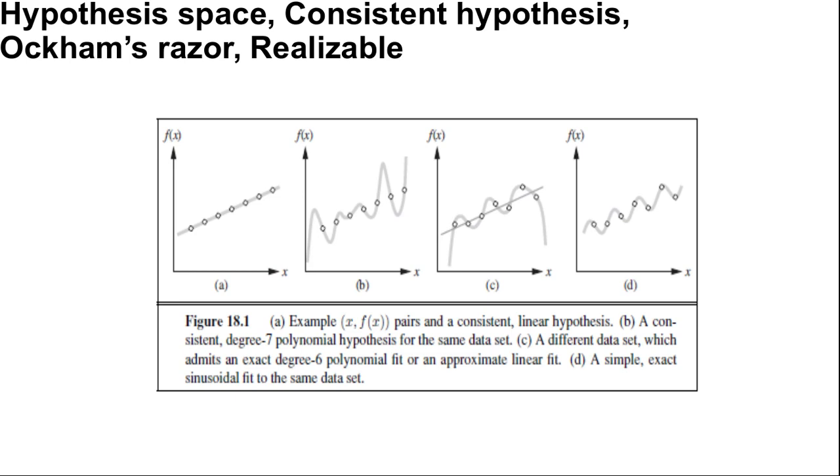A straight line that is not consistent with any of the data points but might generalize fairly well for unseen values of x is also shown in figure c. In general, there is a trade-off between complex hypotheses that fit the training data well and simpler hypotheses that may generalize better.